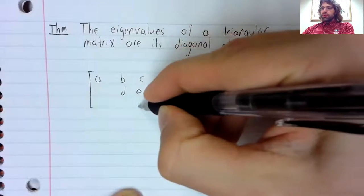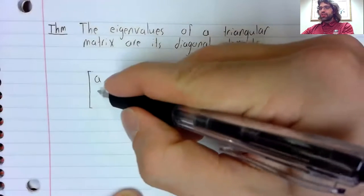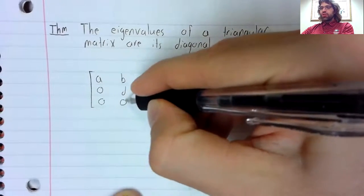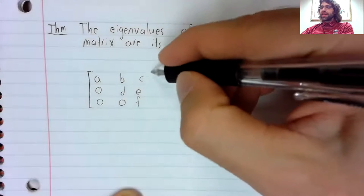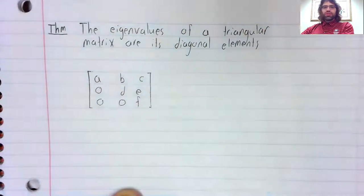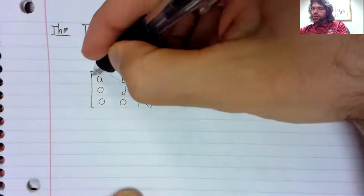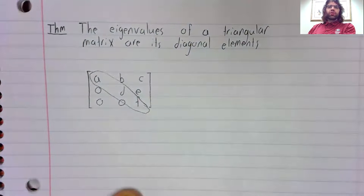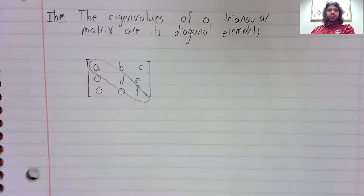So here's an upper triangular matrix, because all of the numbers below the diagonal are zero. And our theme is that these diagonal elements are the eigenvalues.